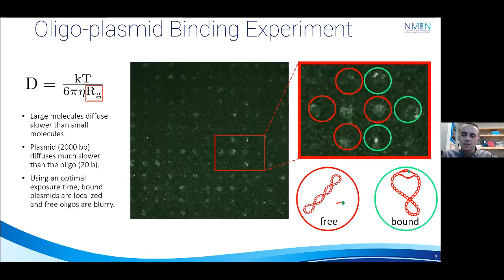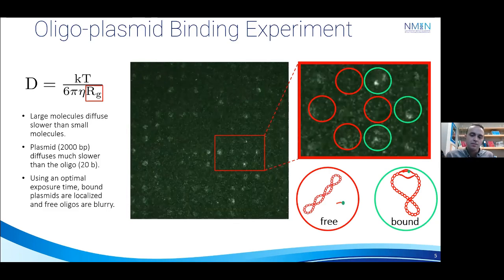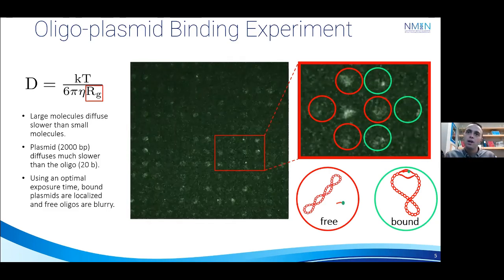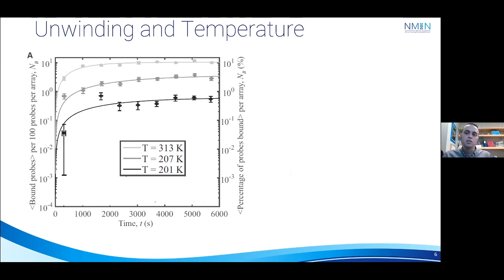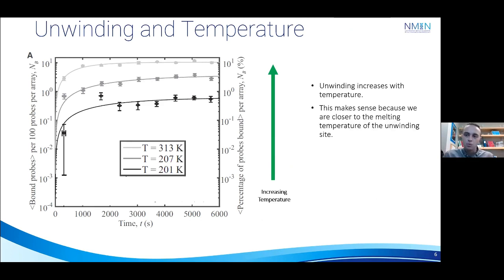And so in the past, our group has used this method to determine the effect of a number of parameters on strand unwinding. For instance, a very basic question someone might ask is, how does temperature influence this unwinding? Well, as you can probably guess, the increase in the temperature will also increase the amount of unwinding. If this doesn't make sense to you, we can explain it a little more by noting that increase in the temperature will bring the plasmid closer to its natural melting temperature, which gives you more bang for your buck in terms of that torsional energy that the supercoiling is putting into the system.